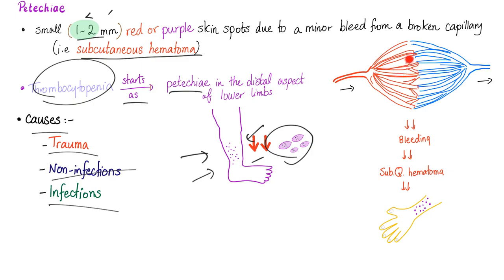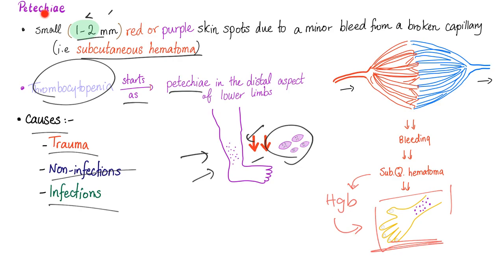The mechanism: you bleed from those tiny capillaries, leading to subcutaneous hematoma, which contains blood, which contains red blood cells, which contain hemoglobin — giving you the red, blue, or purple color of those spots called petechiae. By the way, petechiae is the plural — what's the singular? Let me know down below in the comment section.